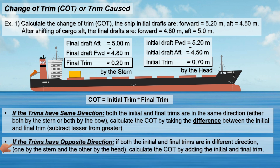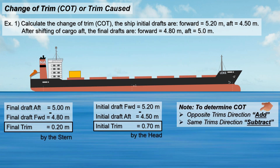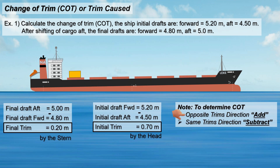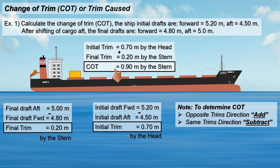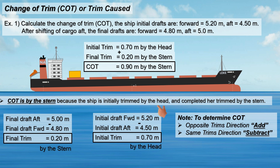If the trims have opposite directions — one by the stern and the other by the head — calculate the change of trim by adding the initial and final trim. In short: add if the initial and final trim are in opposite directions; if they are in the same direction, subtract. In this case, the initial and final trim are in opposite directions, so we add them. The change of trim is 0.90 meter, by the stern, because the ship is initially trimmed by the head and finally trimmed by the stern.